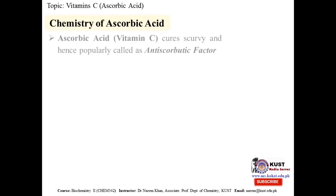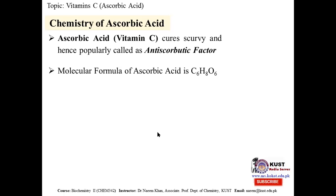Ascorbic acid, or vitamin C, actually cures scurvy disease and is therefore commonly known as the anti-scorbutic factor — a factor that is against scurvy, preventing it. The molecular formula of vitamin C is C6H8O6. Just like the C6 compounds we know in biochemistry — hexoses — it is a sort of hexose sugar, so it will have an acid group.